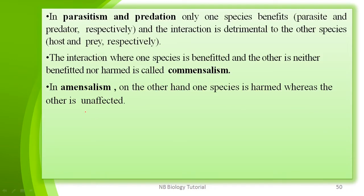In parasitism and predation, only one species is benefited — known as the parasite or predator — and the interaction is detrimental to the other species, called the host or prey. In commensalism, one species is benefited and the other is neither benefited nor harmed. In amensalism, one species is harmed while the other is unaffected.